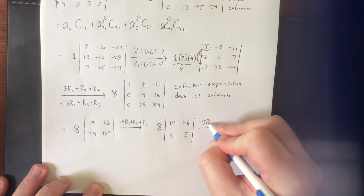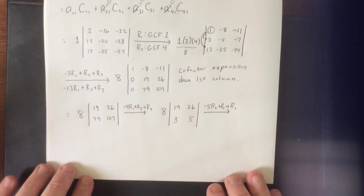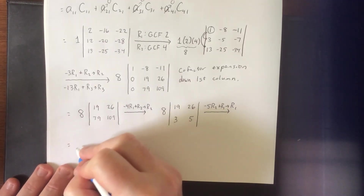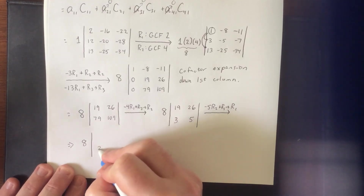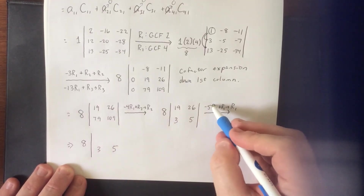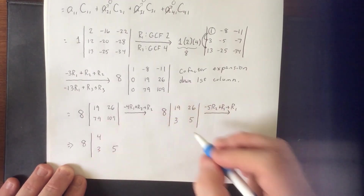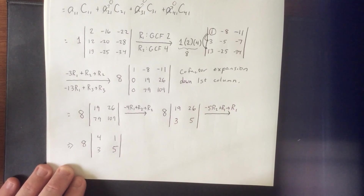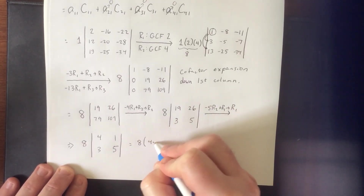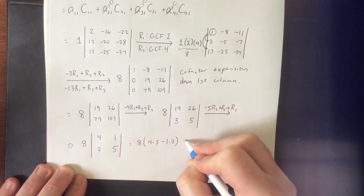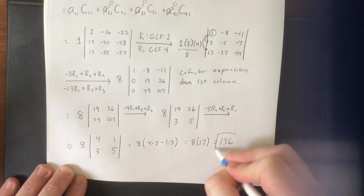Now we have 8 times the 2x2 determinant: 4×5 minus 1×3, which is 8×17, for a final answer of 136.